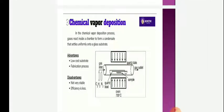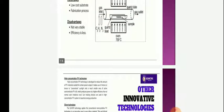Then the third one is chemical vapor deposition. In the chemical vapor deposition process, gases react inside the chamber and form and condense or settle uniformly on the glass substrate. Advantages: low cost substrate fabrication process. Disadvantages: The disorder is not very stable. Efficiency is less.